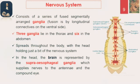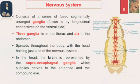The nervous system is well-developed. It consists of a series of fused segmentally arranged ganglia, joined by longitudinal connectives on the ventral side. There are three ganglia lying in the thorax and six in the abdomen — nine ganglia overall. The supraoesophageal ganglion is called the brain of the cockroach. There is a suboesophageal ganglion and a circumoesophageal commissure joining them both. The nervous system is ladder-like in structure.